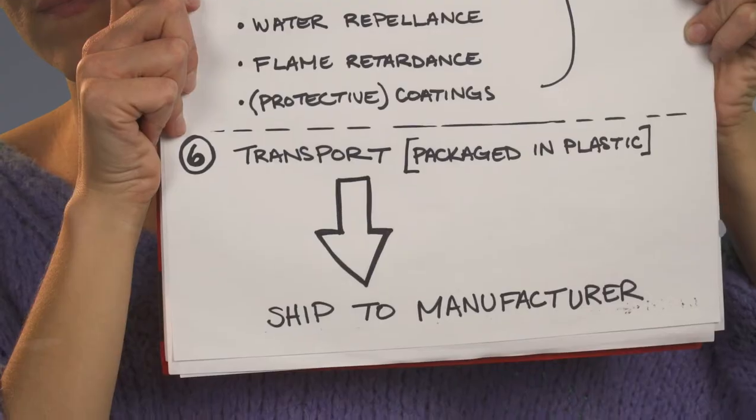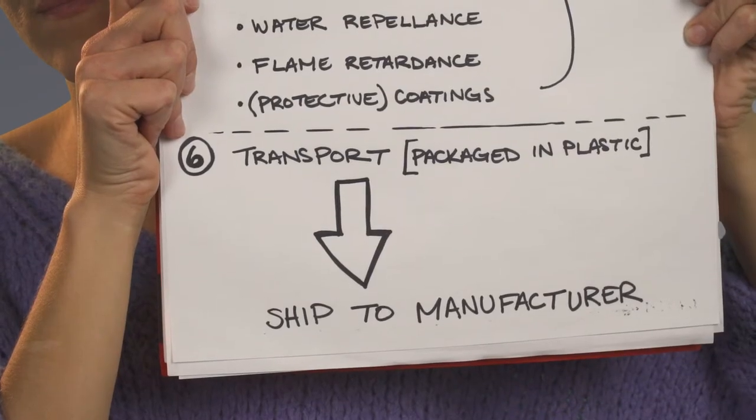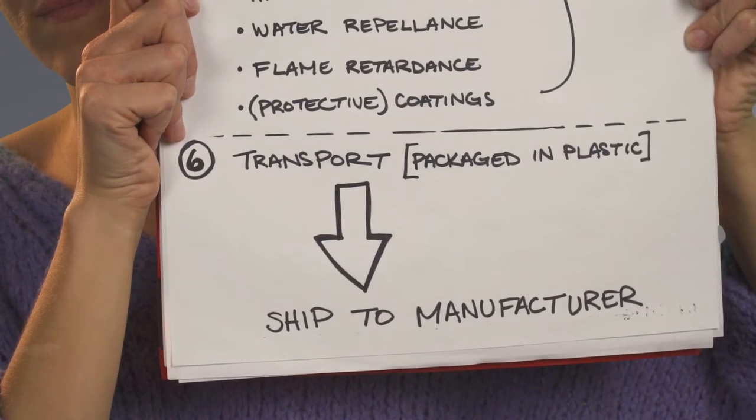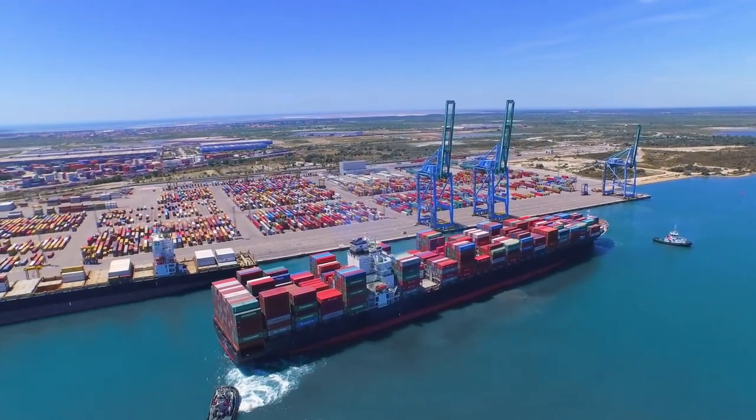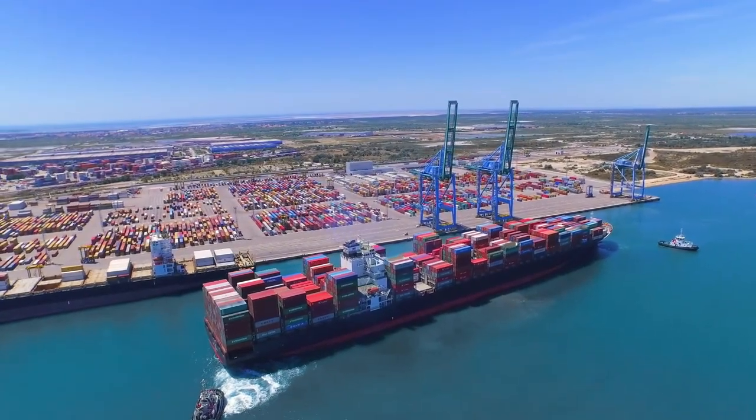After all of that has been done, the fabric is put onto rolls and transported to the manufacturer. When they're transporting it, they have to wrap it up and package it. What do they package it in? Plastic. So from there, they ship it to the manufacturer.